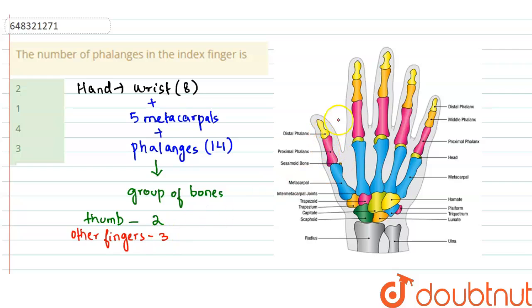In thumb there are two, while other fingers there are three phalanges, which are distal, middle, and proximal phalanges.